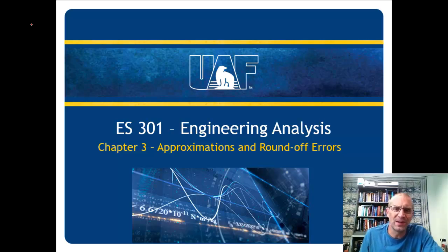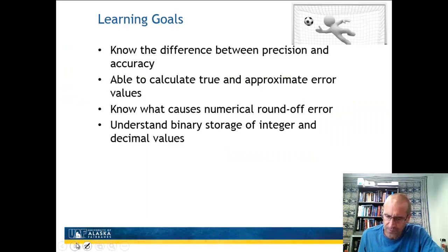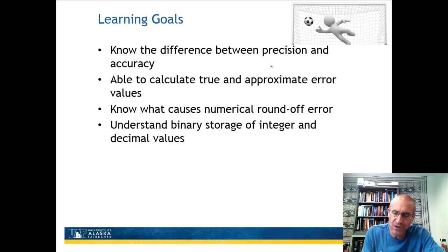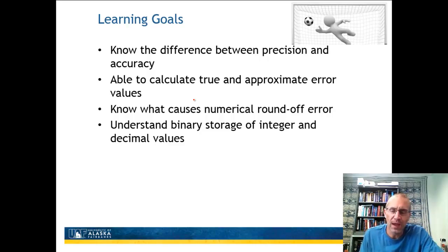Welcome back to ES301 Engineering Analysis. This is Chapter 3, Approximation and Roundoff Error. Here are the learning goals. At the end, you'll know the difference between precision and accuracy. You'll be able to calculate both true and approximate error values. You'll know what causes numerical roundoff, and you'll also understand binary storage of both integer values as well as decimal values.